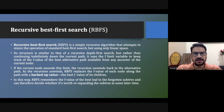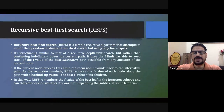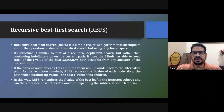In Recursive Best First Search we take a variable called the f-value. That f-value is nothing but a backup value. If we are going along a path in a greedy manner and find that we are not reaching the goal, this f-value will limit us so that we do not go further into a path where we don't have the chance to reach the goal.